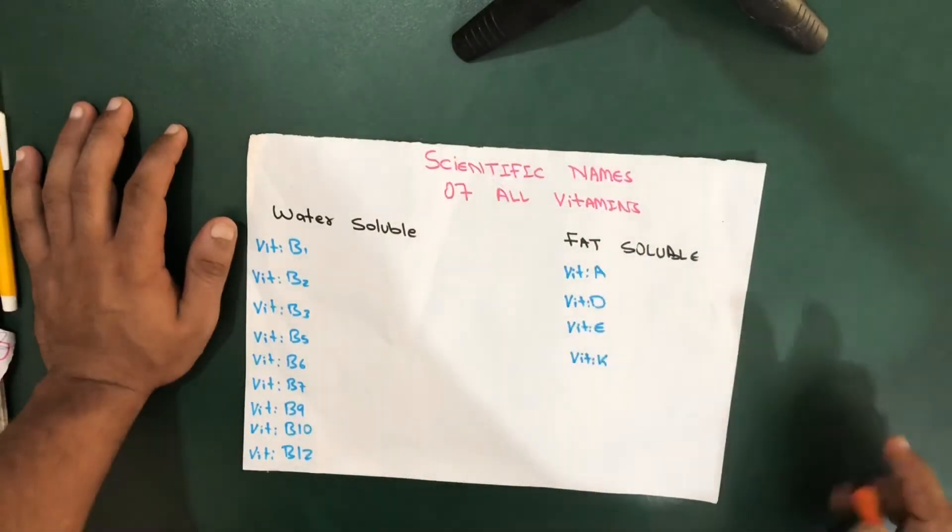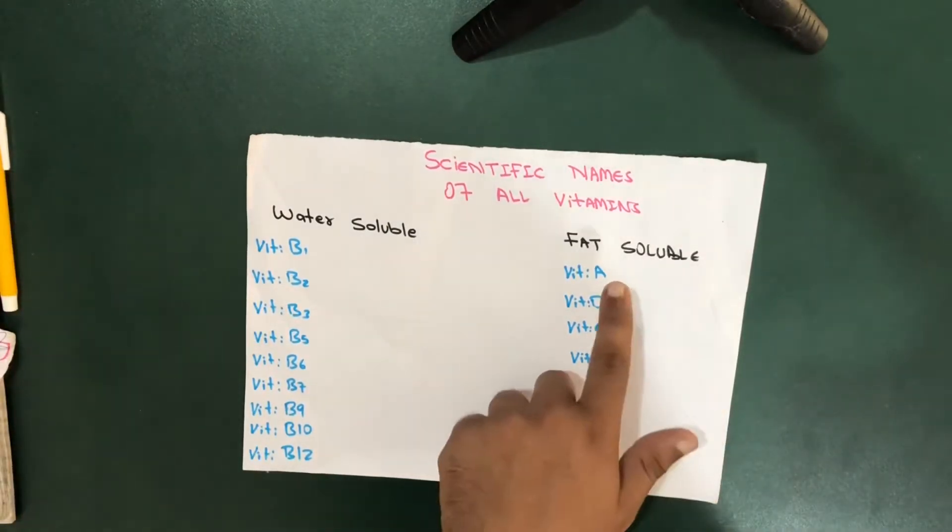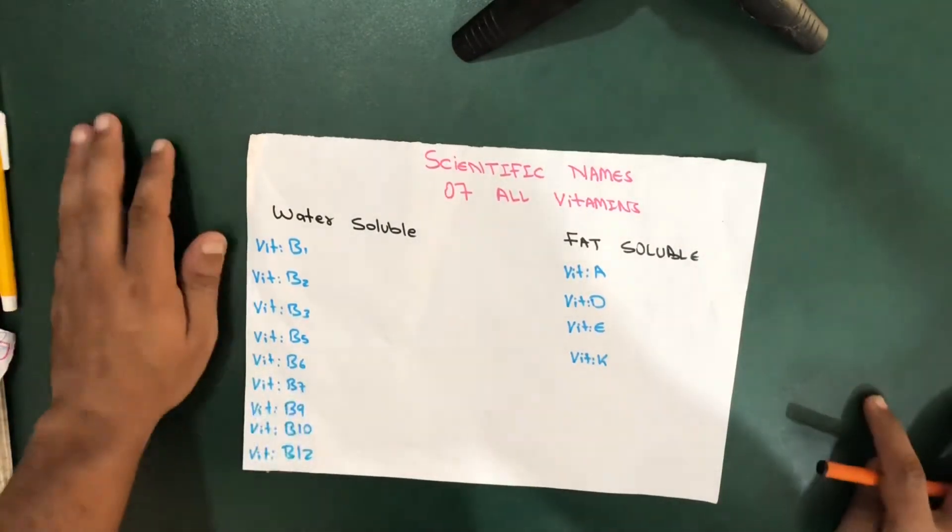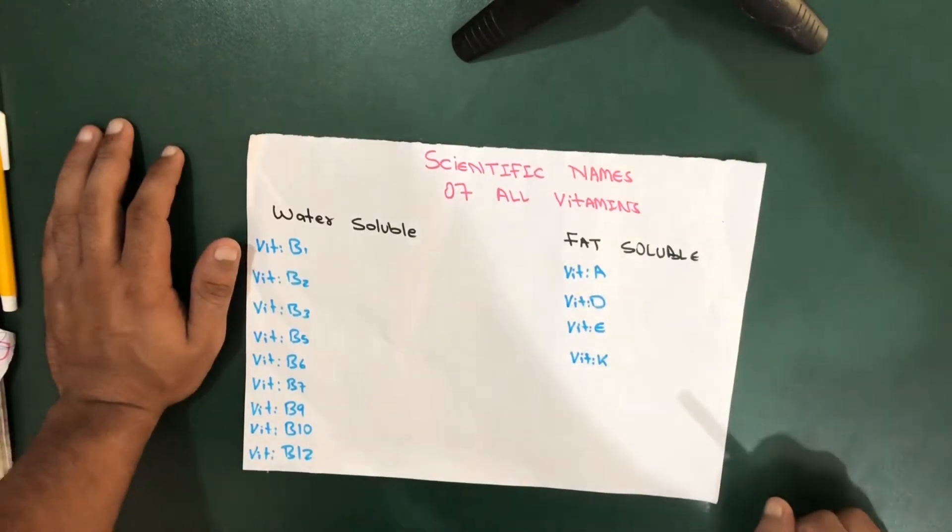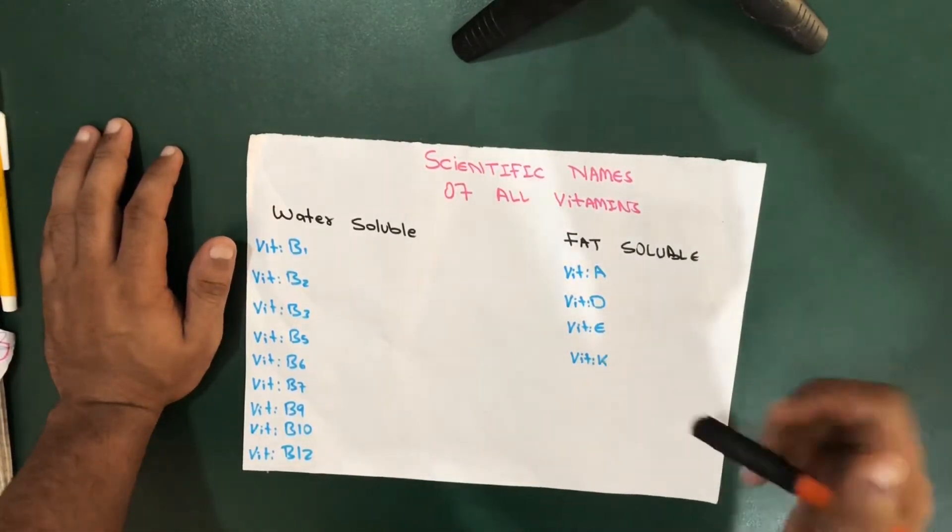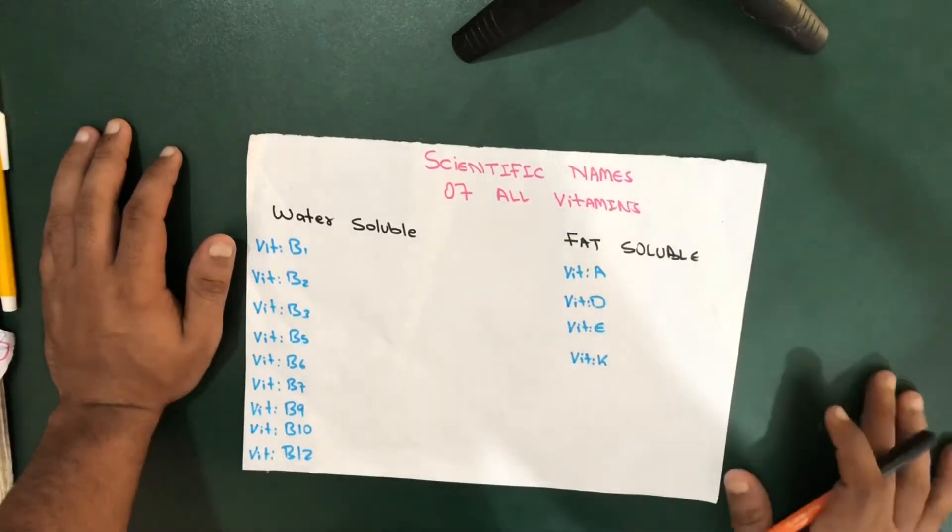Water soluble and fat soluble. The fat soluble vitamins are vitamin A, vitamin D, vitamin E, and vitamin K, which you can remember by the word DRAG - you know, the singer Drake. Remove the R and you get DAEK. In the water soluble vitamins we have the vitamin B complex.